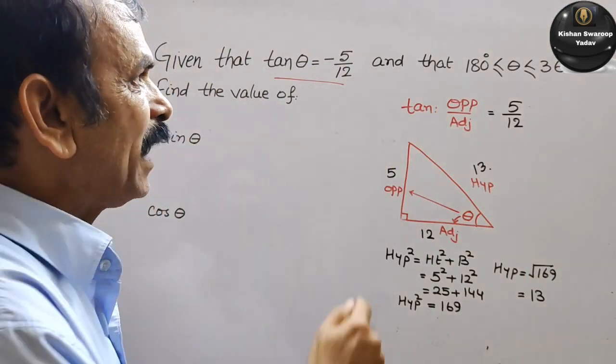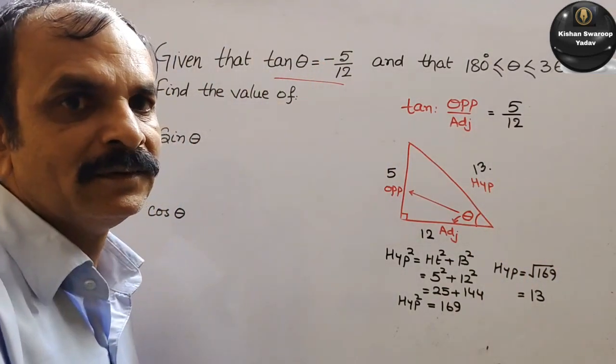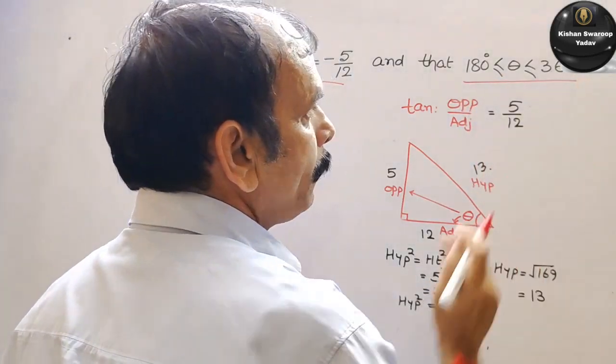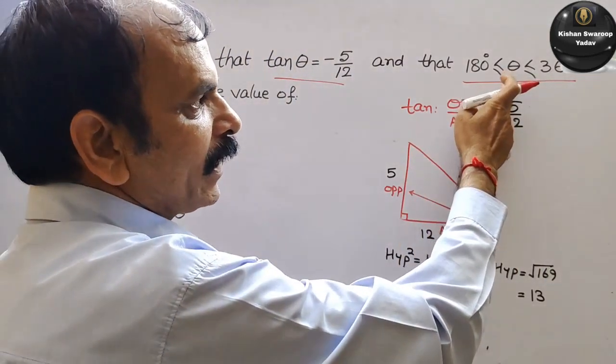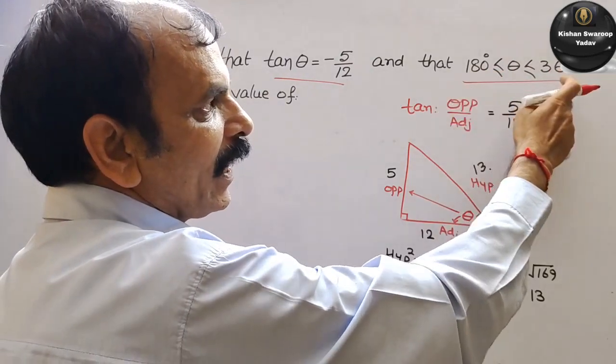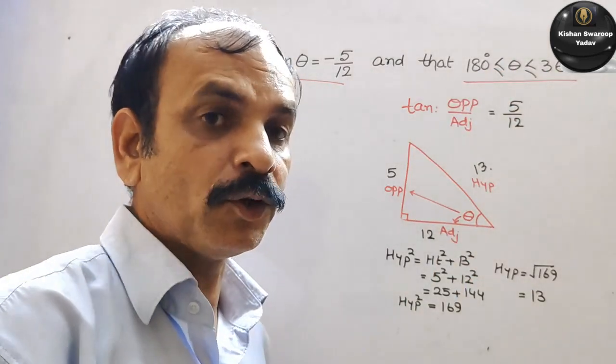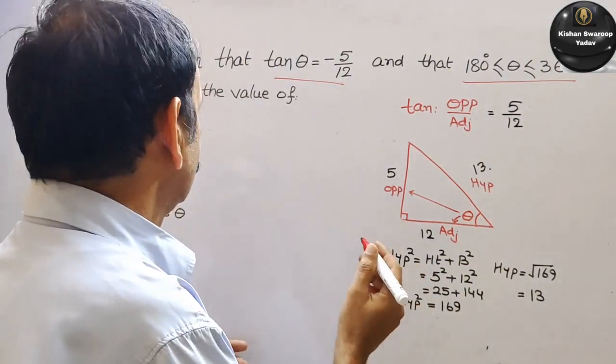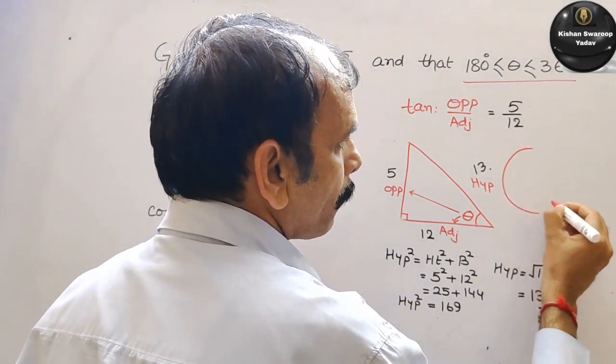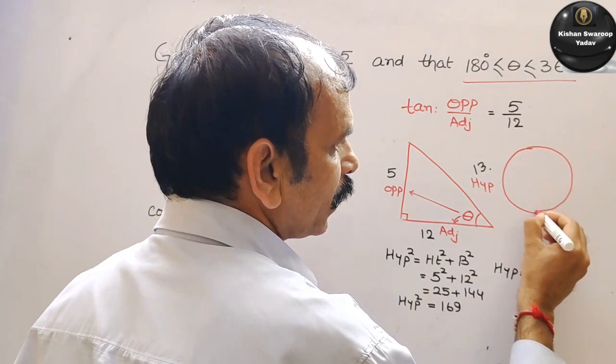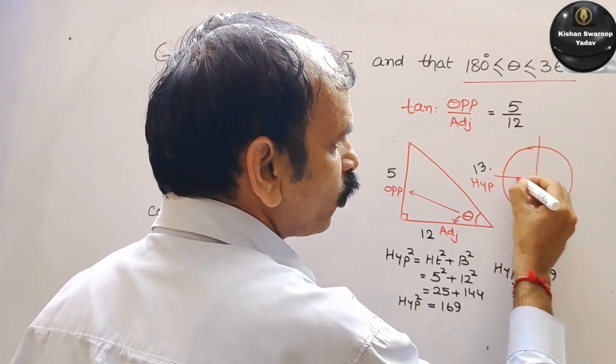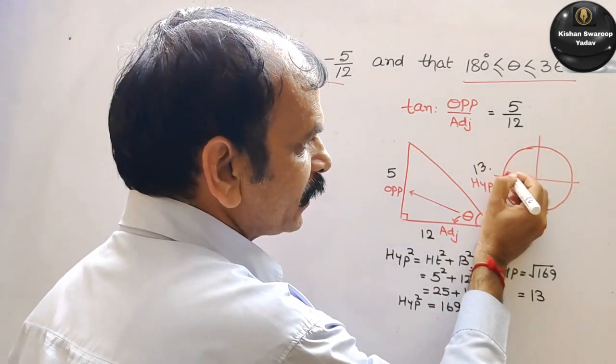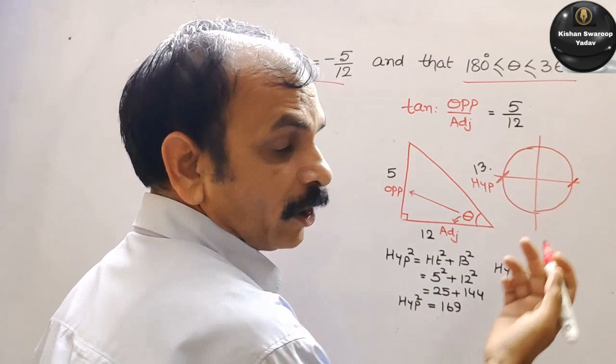Now see the minus sign and what they have given. 180. It should be theta is greater than 180 and it should be less than or equal to 360 degree. Now understand this. Suppose this is your circle and these are the 4 quadrants. 180 degree lies here and 360 that means it is 0 only.